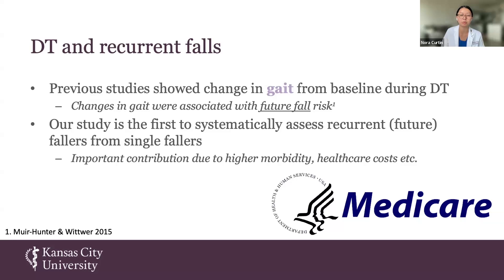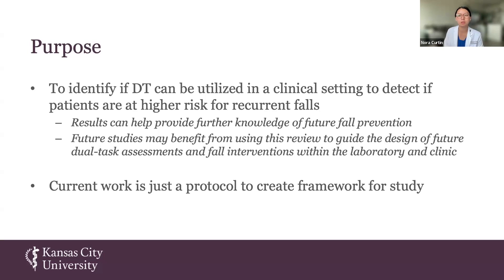With my previous experience at UCLA, where I saw a lot of hip arthroplasties, it's really important to know when patients are going to fall or when they might be indicated for future surgery. If we can prevent that, we can obviously prevent medical costs and reduce comorbidities. The general purpose of my study was to identify if dual tasks could be utilized in a clinical setting to detect patients at higher risk for recurrent falls, with the hope of providing further knowledge for fall prevention and guiding future study design.